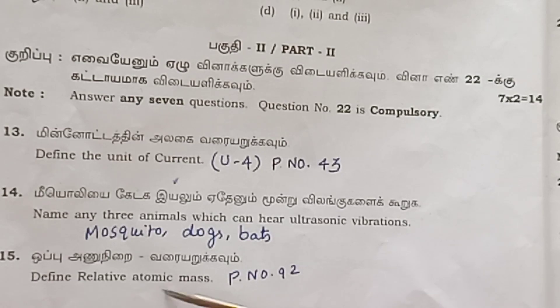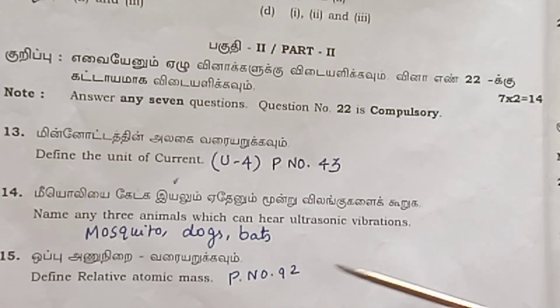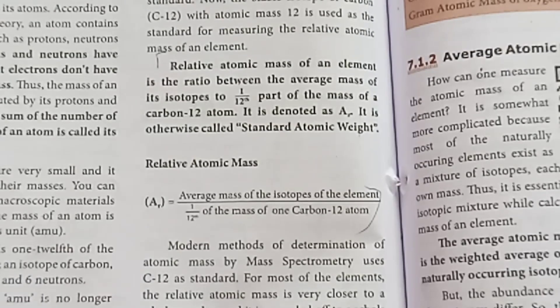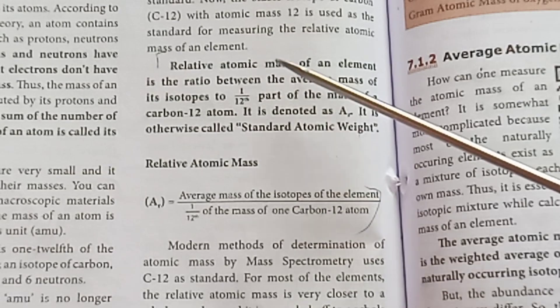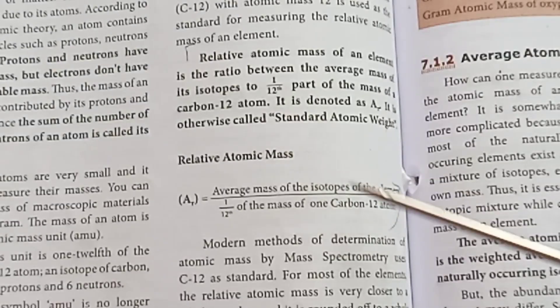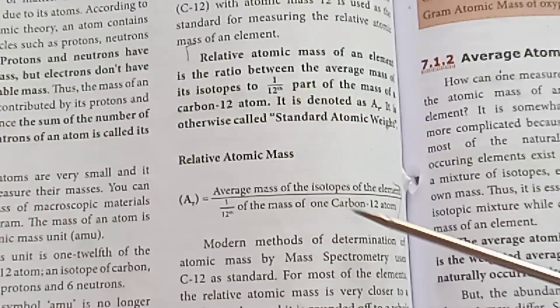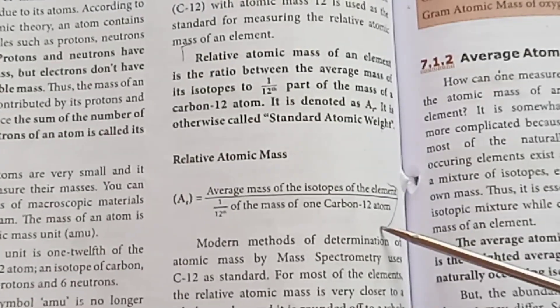Question 15: Define relative atomic mass. Page number 92. Relative atomic mass — refer to the formula given in the textbook.